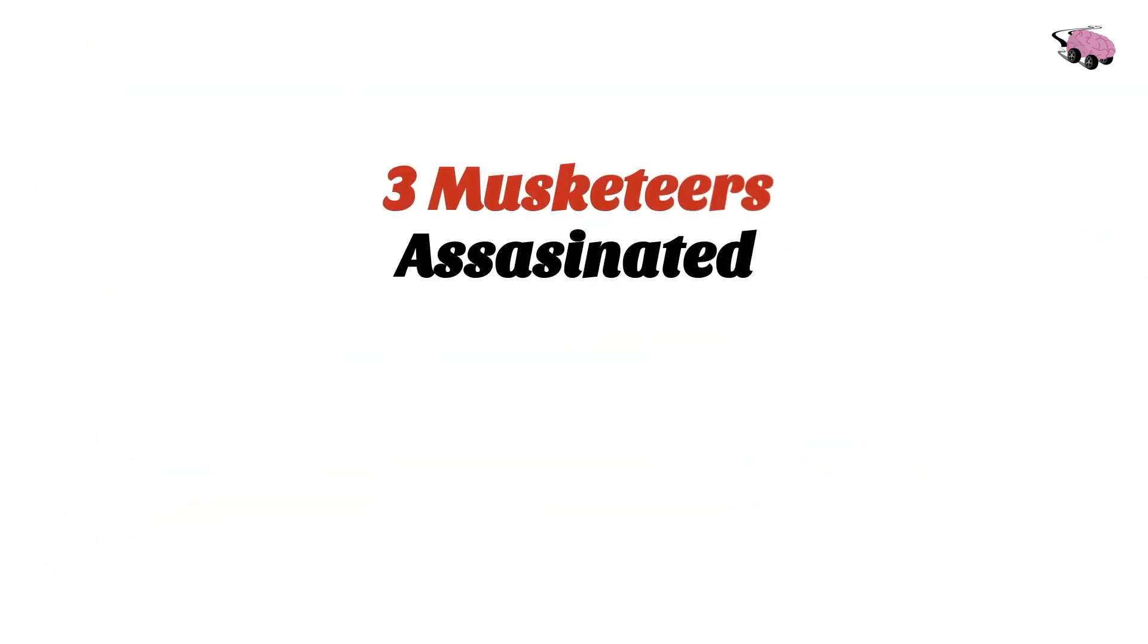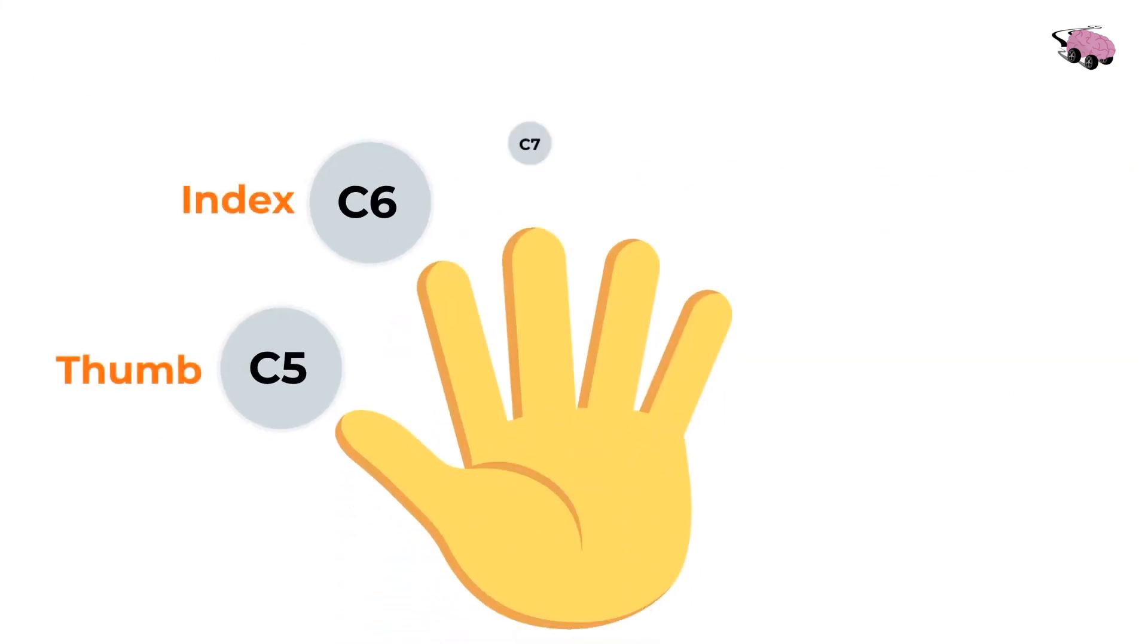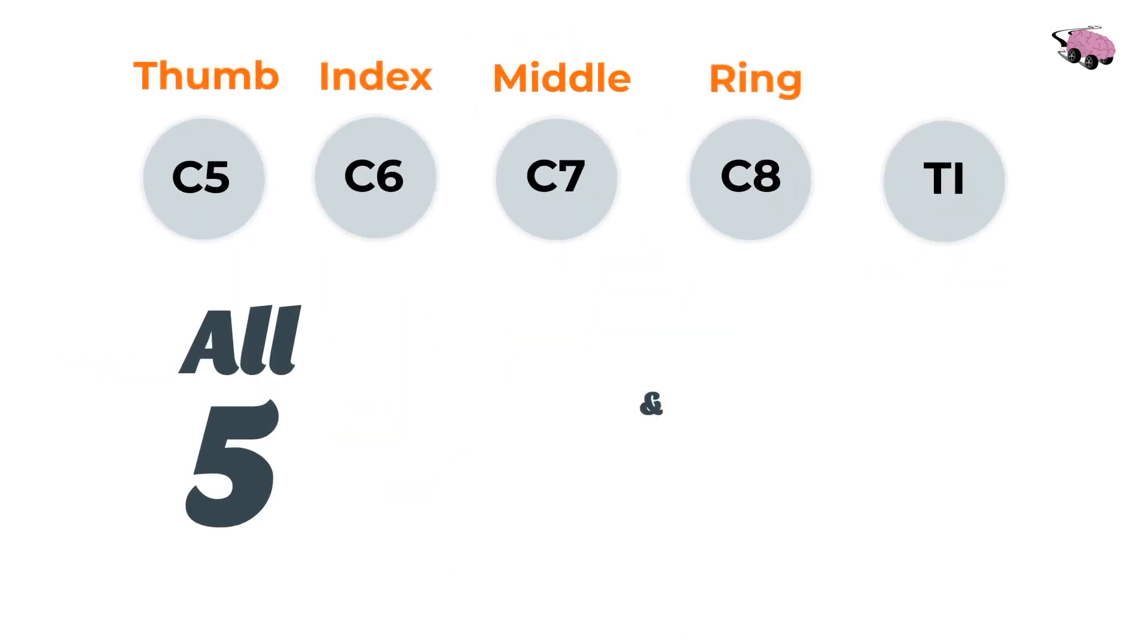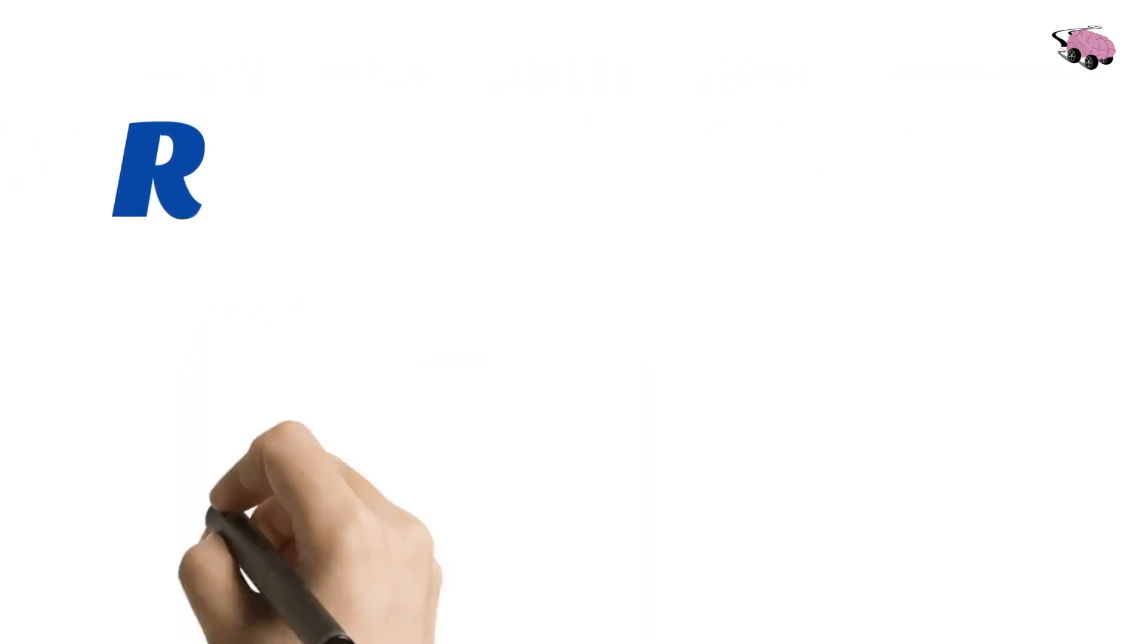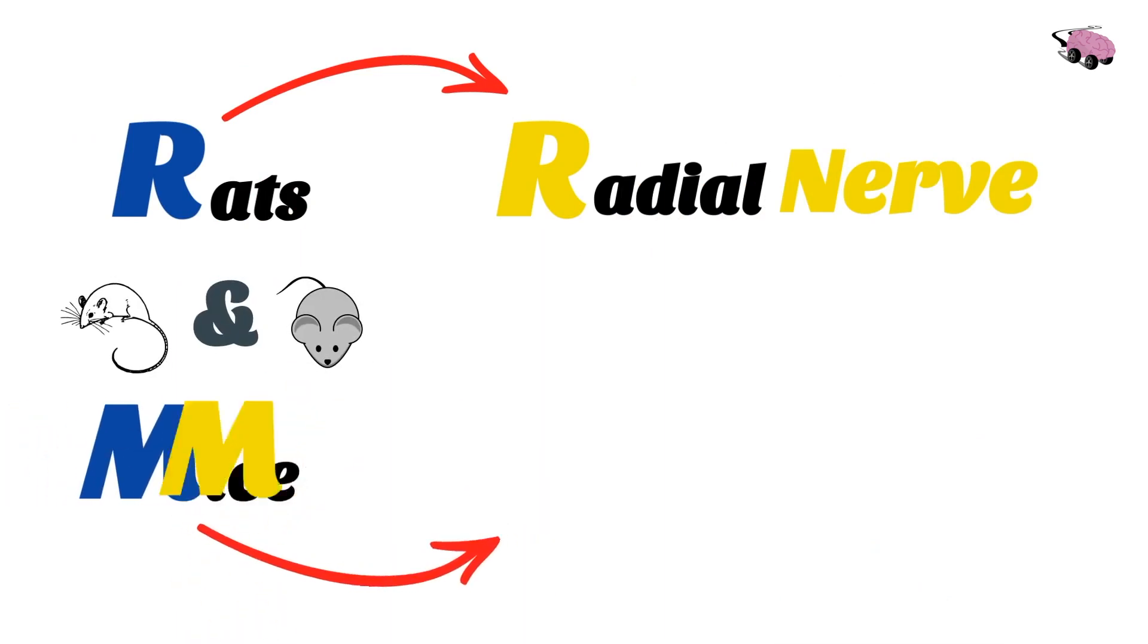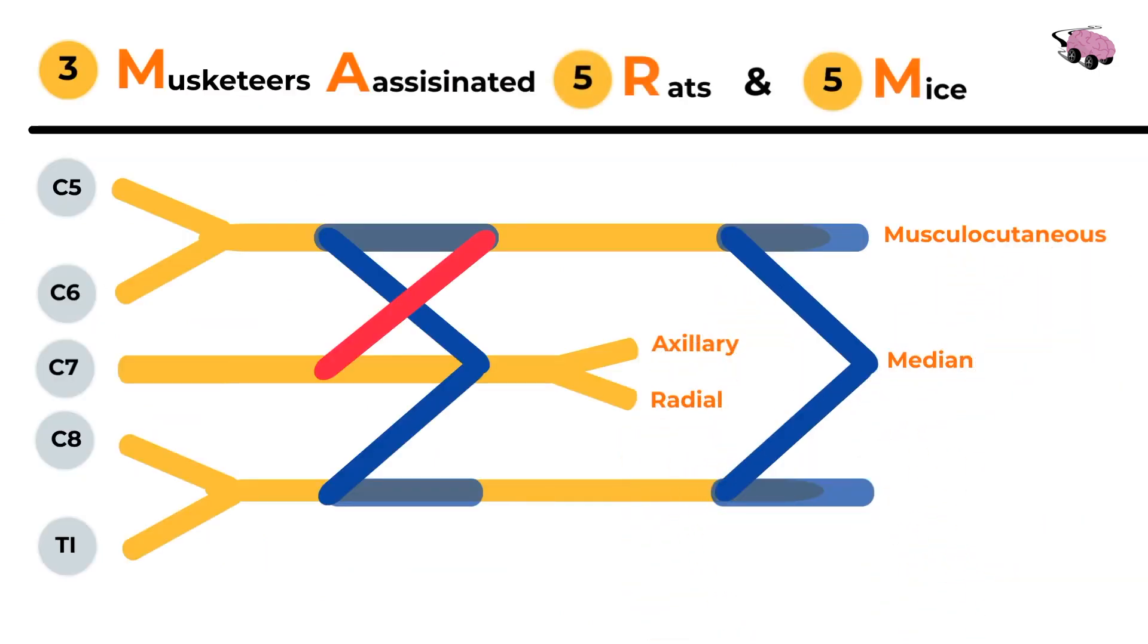Three musketeers assassinated five rats and five mice. Five, so that means all our fingers, all the five nerve roots. R in rats will stand for our radial nerve. M in mice will stand for our median nerve. Let's label in our radial rats and our median mice.